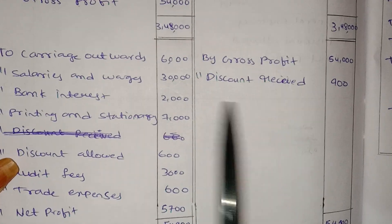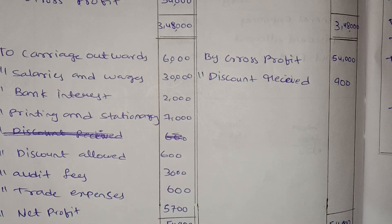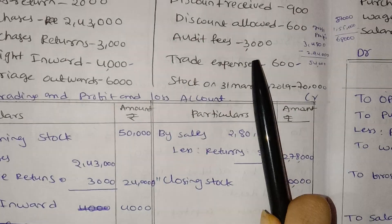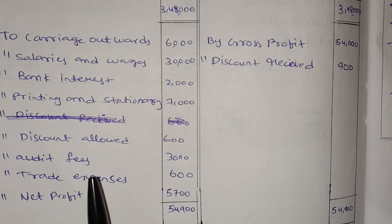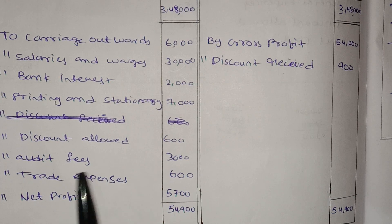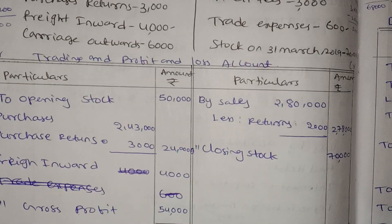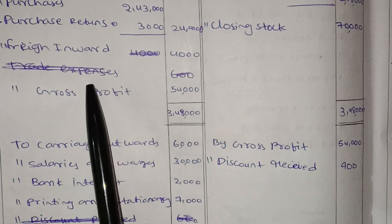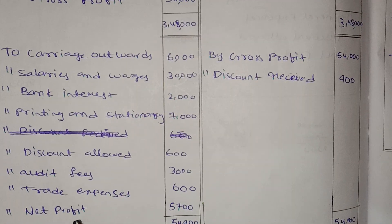Discount received — received as a cashier. This is also the debit side — debit and debt. Next: trade expenses and general expenses — only trade expenses we have on the debit side.